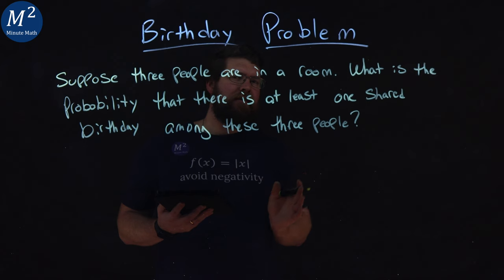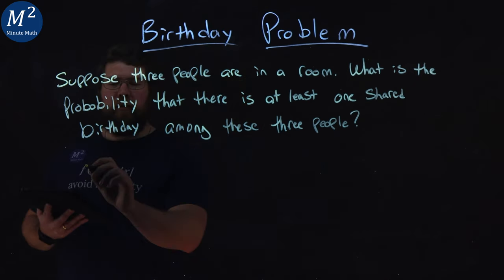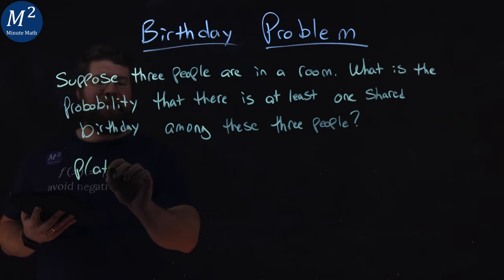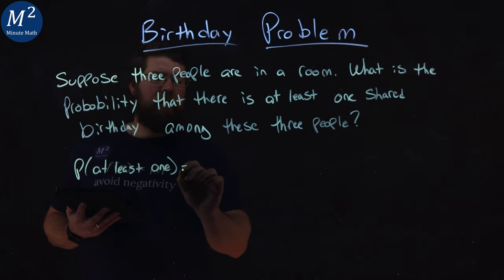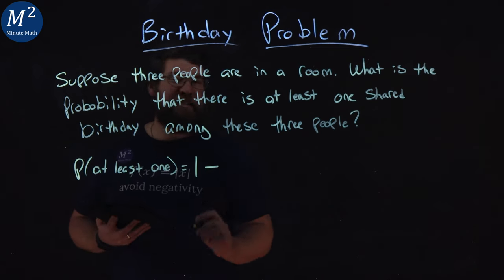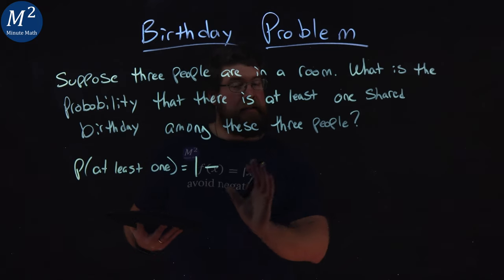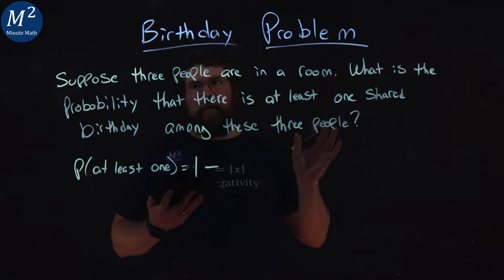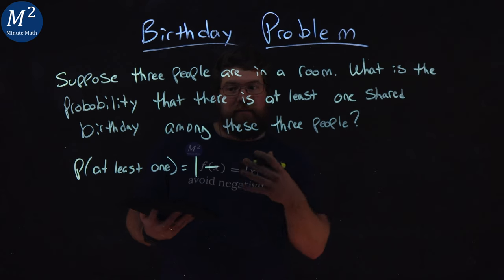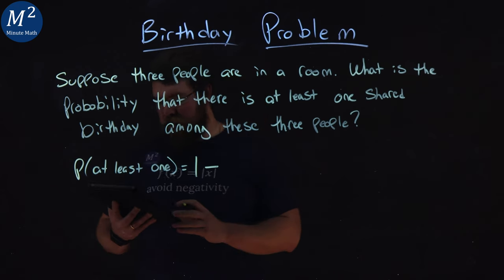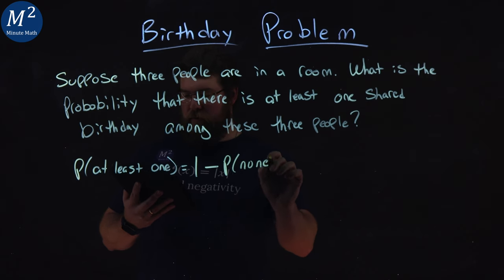We want to think of the opposite of at least one. The probability of at least one shared birthday, the opposite of that is going to be one minus the probability that there's no birthday shared. At least one means there's at least one group of three people in a room that have a shared birthday. The opposite is there are none. So one minus the probability of none.